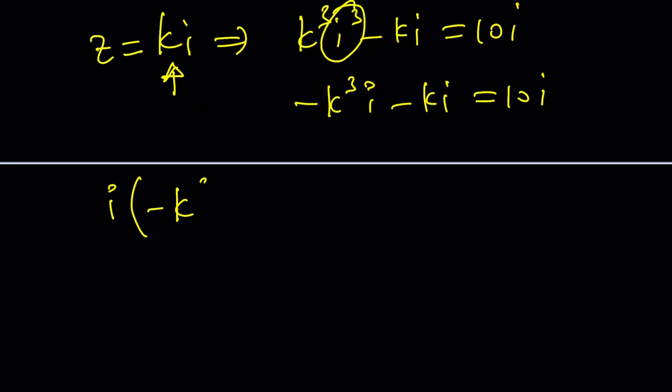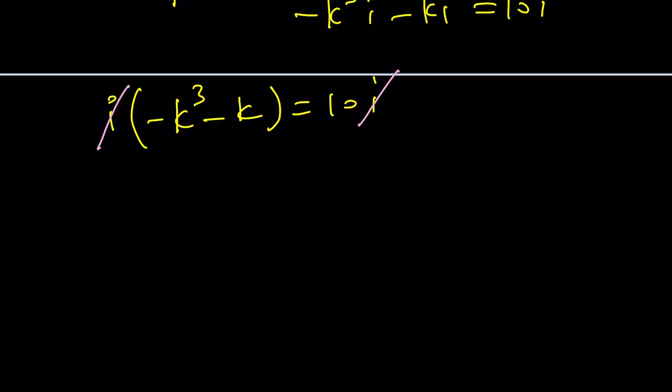i cancels out. Why did I leave the negative inside? Because I want to stick to it. And I want to put everything on the same side, of course. k³ + k + 10 = 0.